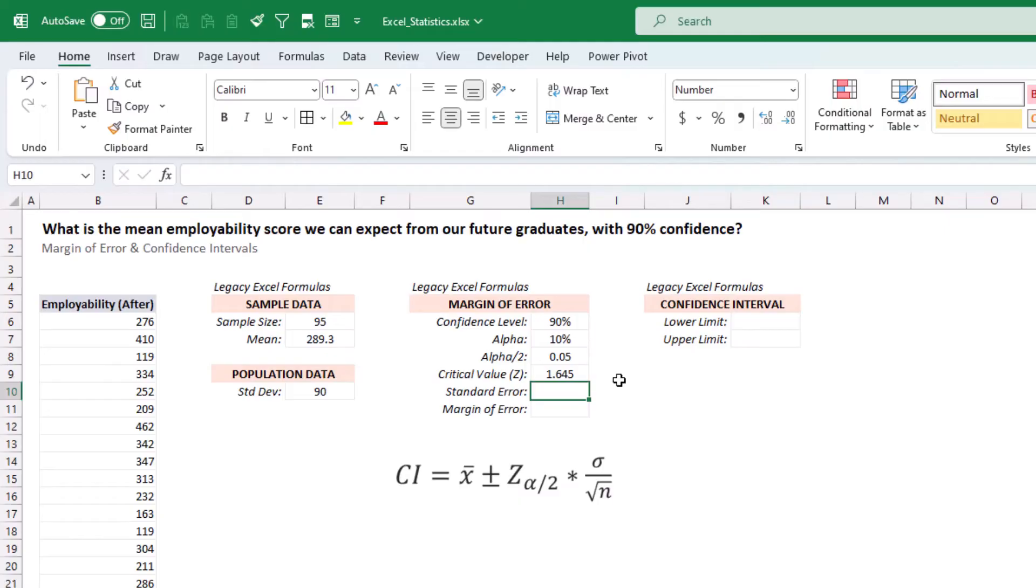Now let's calculate the value for a standard deviation, which for a distribution of sample means is the standard error. So to calculate that, let's grab the standard deviation of our population and divide by the square root of our sample size. We get a standard error of 9.23.